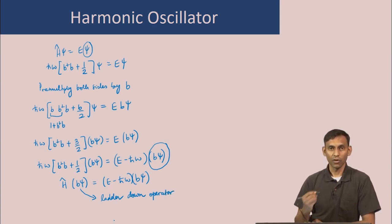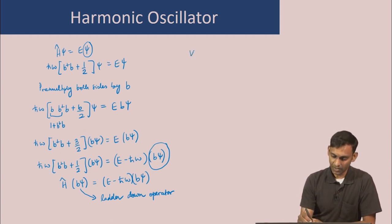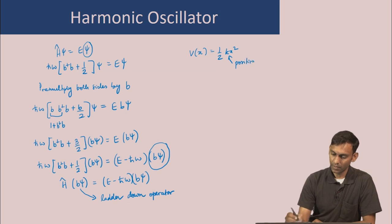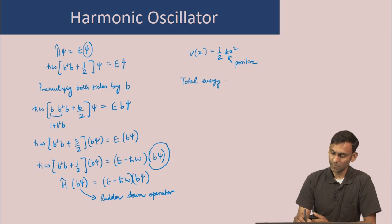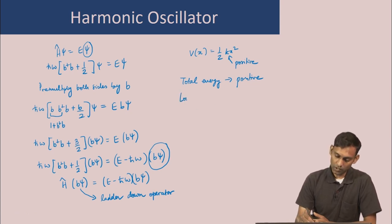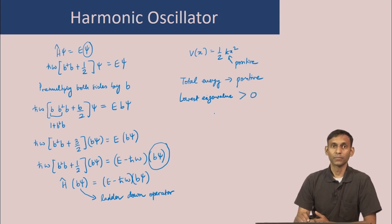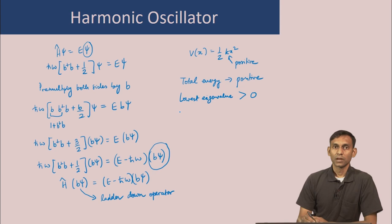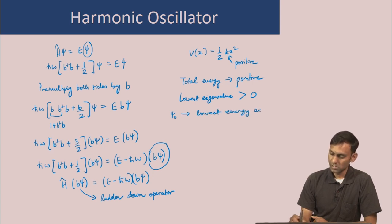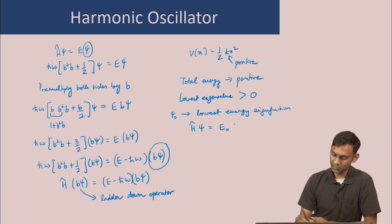For a harmonic oscillator with potential energy V(x) equal to half k x squared, where k is positive, the total energy is positive. This implies that the lowest eigenvalue of the Hamiltonian must be greater than zero — the eigenvalues have a lower bound. Now suppose that psi 0 is the lowest energy eigenfunction, so H psi 0 equals E_0 times psi 0.